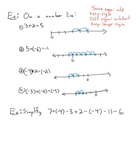Now, the nice thing about what we talked about on the previous slide is that if we have a string of additions and subtractions, we can change all of the subtractions to additions, which makes our life very easy. So this expression is the same as seven plus negative four plus negative three — I'm changing that minus three to plus negative three — plus two, and minus negative four becomes plus positive four (the negative of a negative four is positive four). Plus positive four, minus eleven becomes plus negative eleven, and minus six becomes plus negative six.